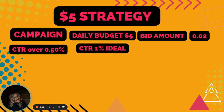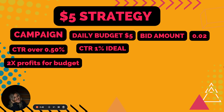Now, if your ad is spending money, you want to look at your CTR — click-through rate. If you have a click-through rate of over 0.50%, you can see conversions. I do have some ads that are converting, but if you have a click-through rate of 1%, this is ideal. This means that people are seeing your ad and clicking on it. Now, what if you are spending all your money or you're not getting sales? Let's talk about those scenarios.